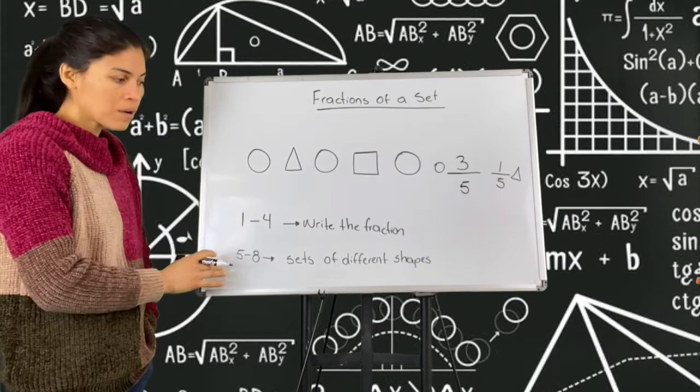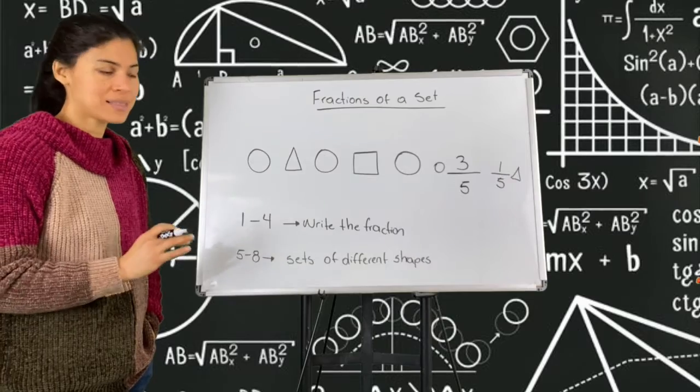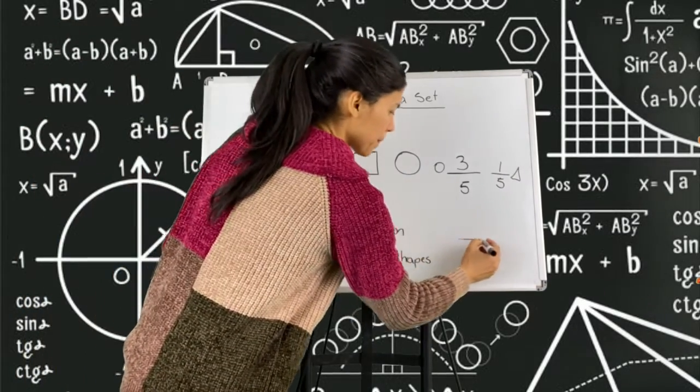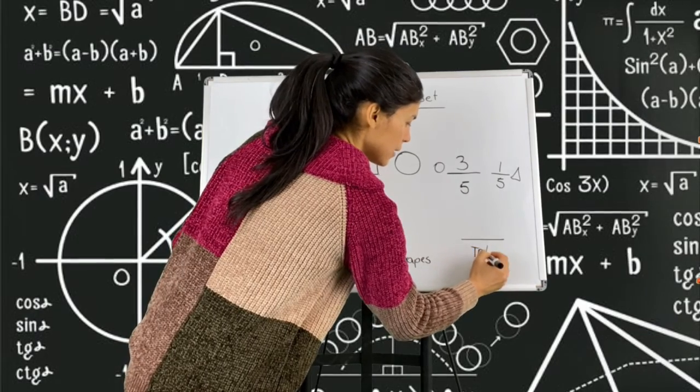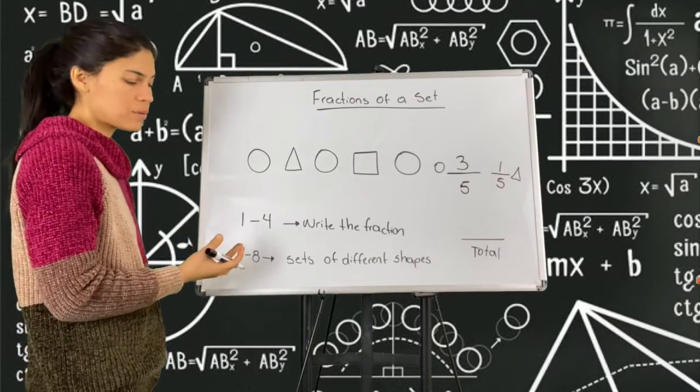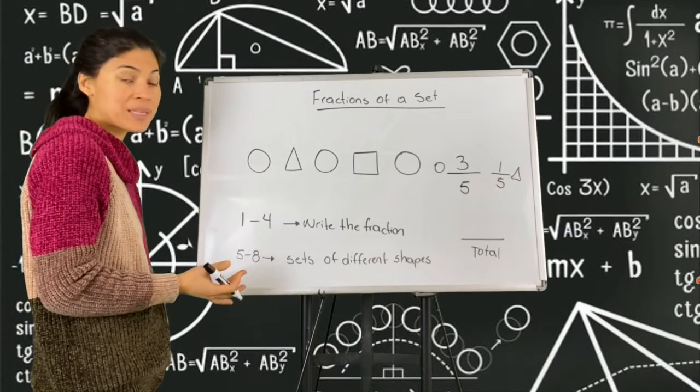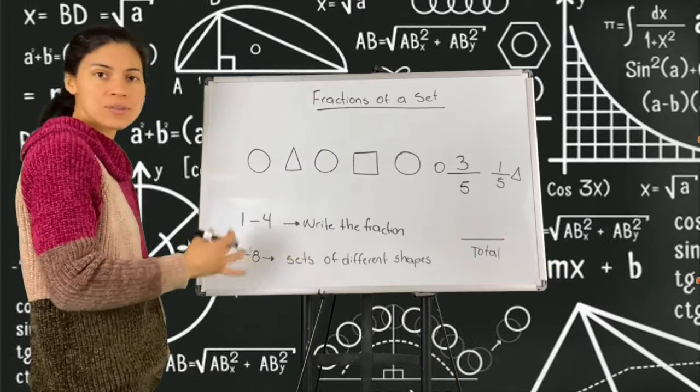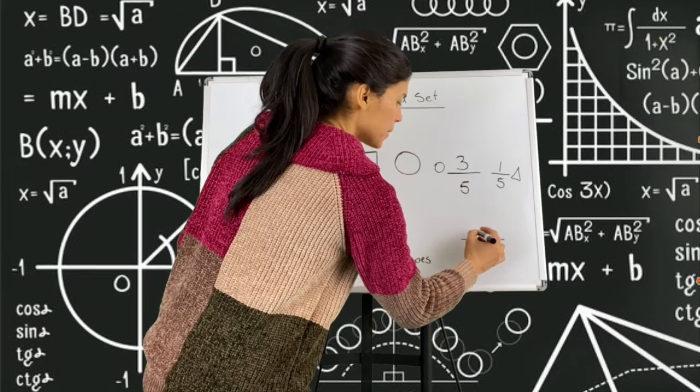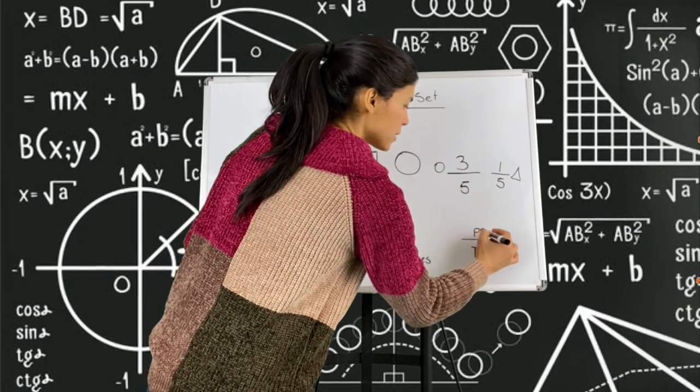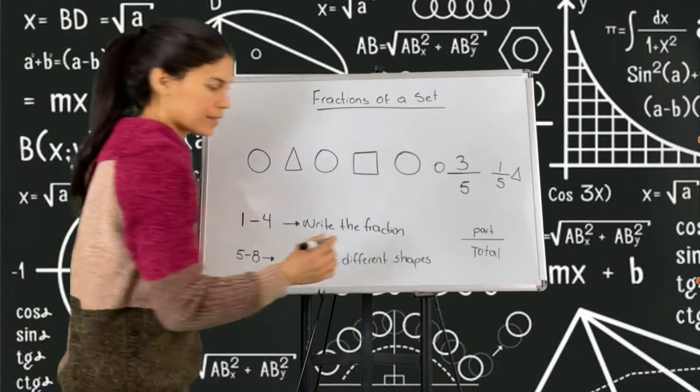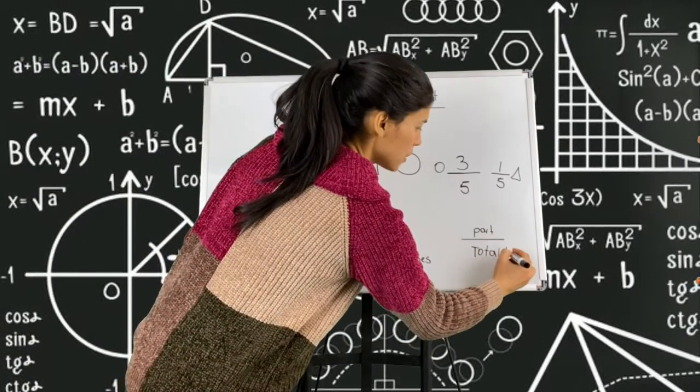Remember, for all of this, count how many shapes are in the set and that will be your denominator. And for the numerator, you put whatever they are asking. If they're asking you for how many hearts, you count how many hearts are in the total and that will be your numerator. This is the part over whole, right? Part over total or whole.